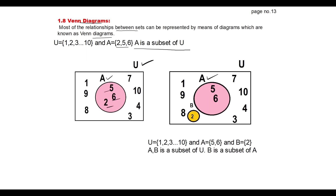The next topic is 1.8 Venn diagram. This diagram will give the relationship between your sets. Consider universal set U = {1, 2, 3, ..., 10} and let A = {2, 5, 6}. A is a subset of U because 2, 5, and 6 are part of the universal set. In the Venn diagram, we represent the universal set using a rectangle. Set A is represented as a circle inside it. All universal set numbers are inside the rectangle, and 2, 5, and 6 are inside the circle representing set A.